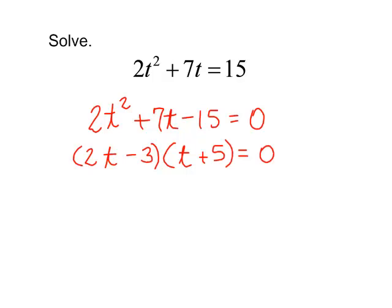Remember, you may need to review your factoring videos in order to solve these quadratic equations. I have 2t minus 3 times t plus 5 equals 0. I know that one of those must equal 0.